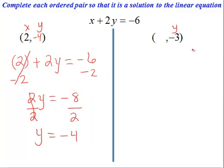Now, in the second case, we have a y value given and it's negative 3. So we're going to replace or substitute any values of y with negative 3. So we have x plus 2 times negative 3 equal to negative 6.